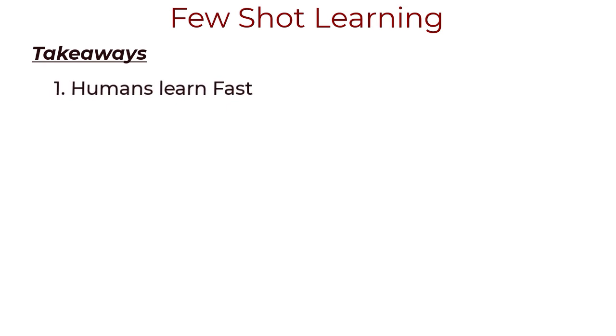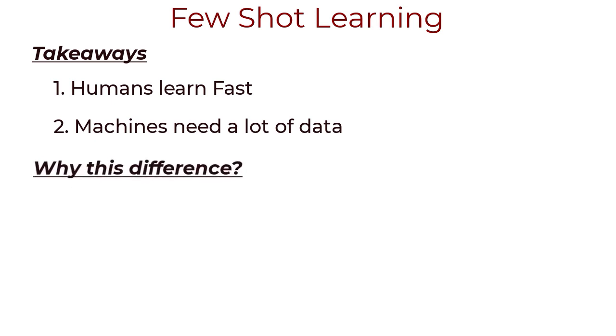There are several key takeaways from these three exercises. Humans learn fast. We only need to see a face once or maybe a couple of times in order to know that we either recognize a face or we just don't. This is the idea behind one-shot learning and few-shot learning. And the second takeaway is that machines need a lot of data. Sometimes even two faces with 10,000 training examples isn't enough.